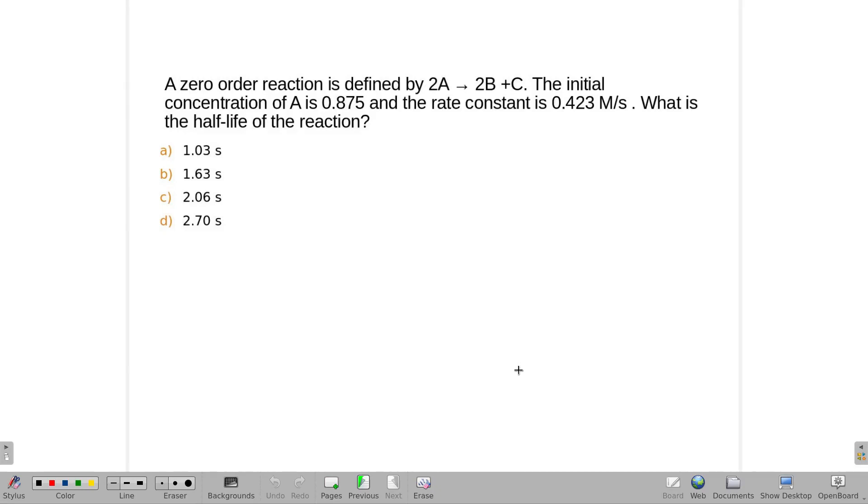A zeroth order equation looks something like that. When it's integrated, we have [A] at time t equals negative kt plus [A] at time zero.